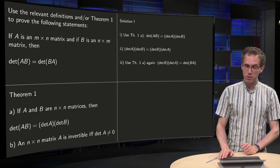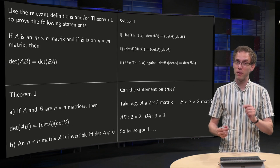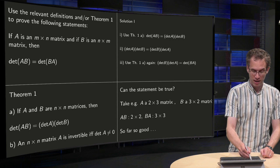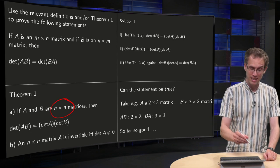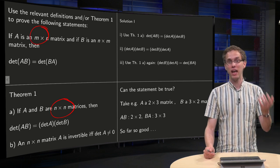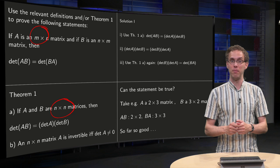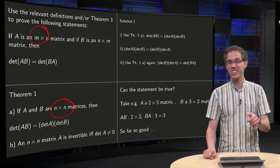Now we need to be careful over here. Because Theorem 1A can only apply for n×n matrices, for square matrices. And in this case we do not necessarily have square matrices. A may be n by n, and B may be n by m, and m is not necessarily equal to n.